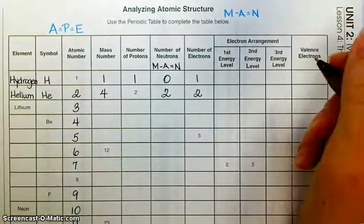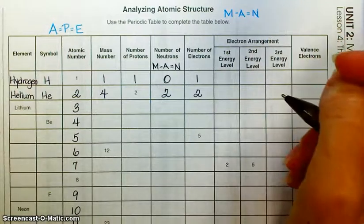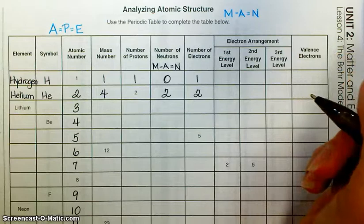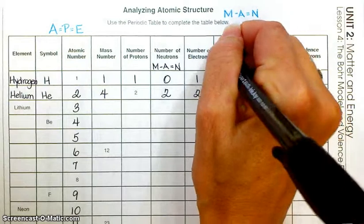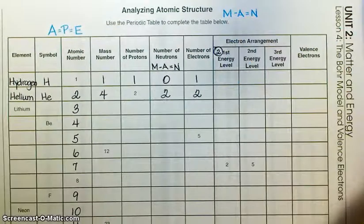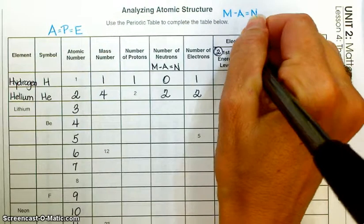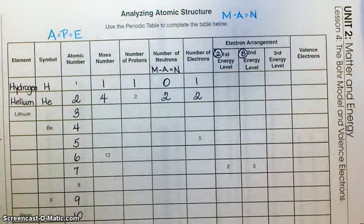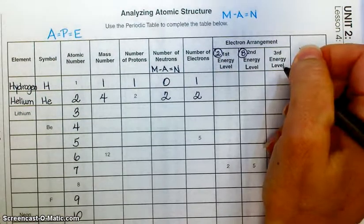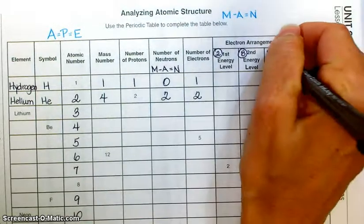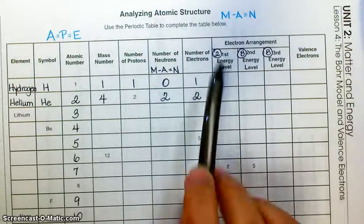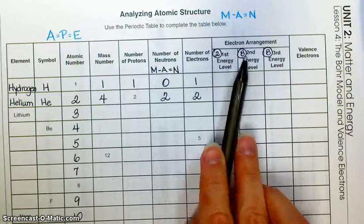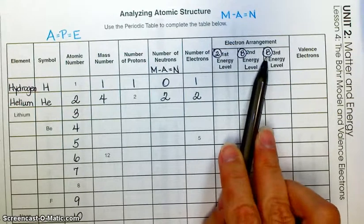Electrons get sorted into energy levels. There is a first energy level closest to the nucleus that holds only two electrons. There's a second energy level a bit further out in the electron cloud that can hold up to eight electrons. A third energy level, even further from the nucleus, can also hold eight electrons. So: two electrons in the first, eight in the second, eight in the third.